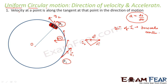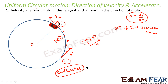Since the acceleration at all points acts towards the center of this circular path, it is known as centripetal acceleration. Both average and instantaneous acceleration act towards the center of the circle in uniform circular motion. Velocity acts tangentially at every point in the direction of motion, while acceleration acts towards the center at all points.